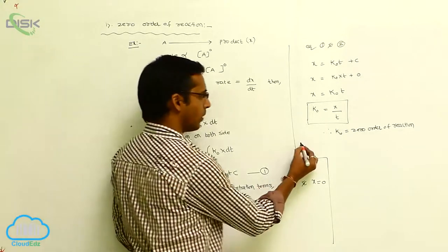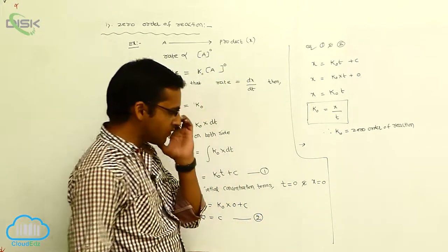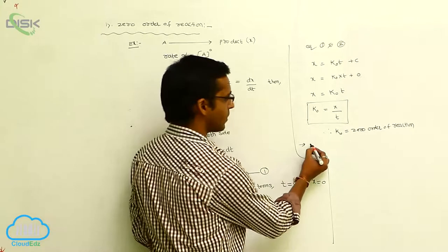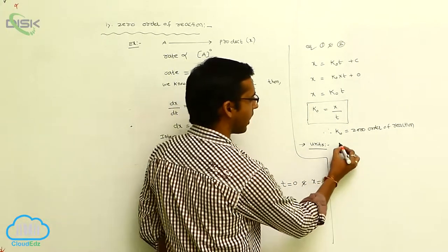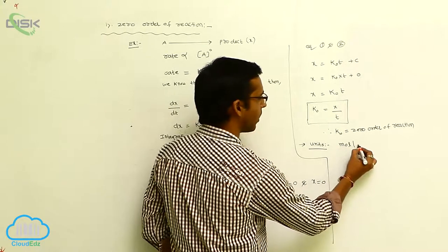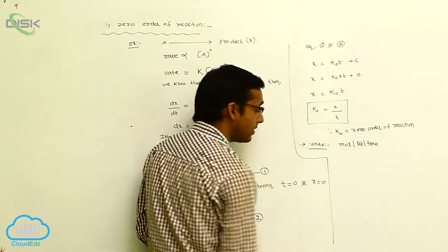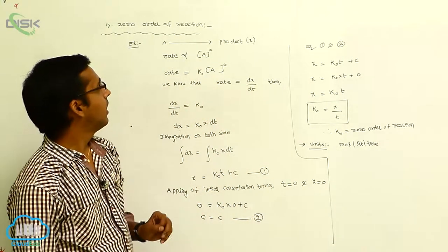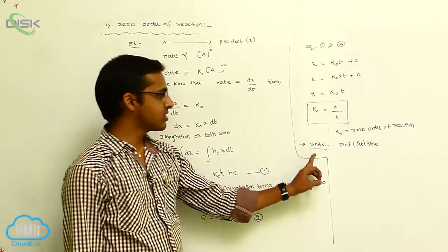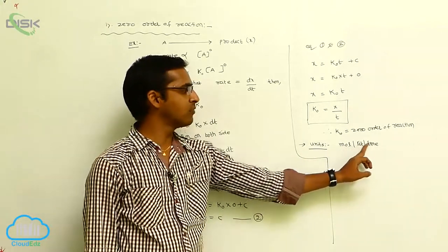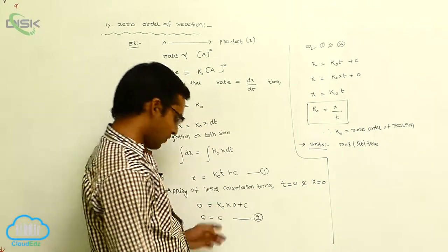Now, the importance of zero order of reaction. First, we discuss units. The rate of reaction unit is mole per liter per time. The rate of reaction and zero order of reaction units are the same: mole per liter per time. This is the first factor.